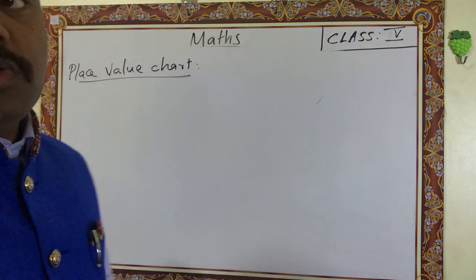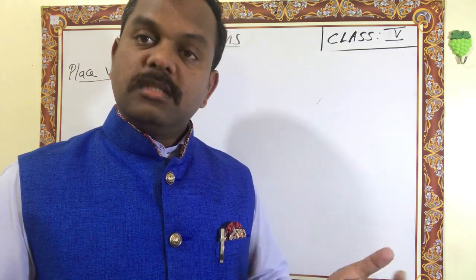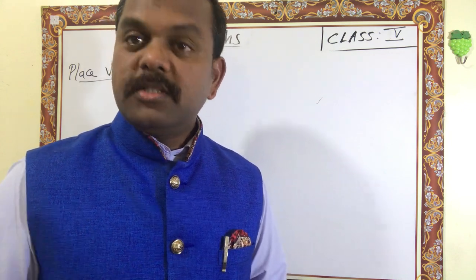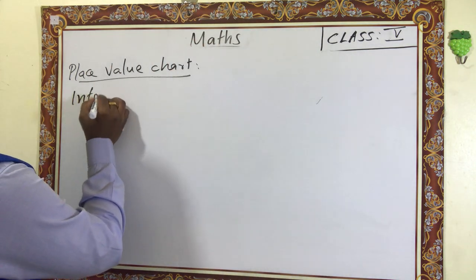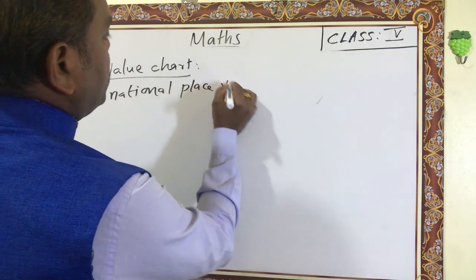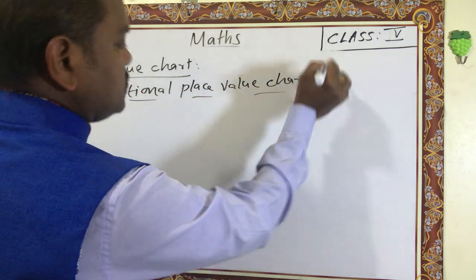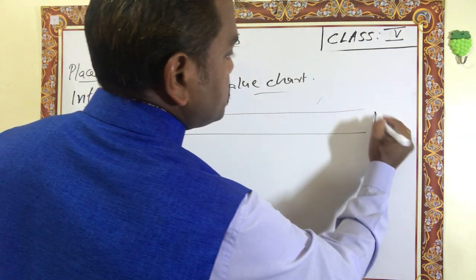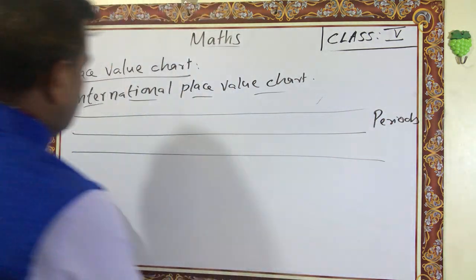In the Indian place value chart you know the order: ones, tens, hundreds, thousands, ten thousands, lakh, ten lakh, crore, ten crore, and so on. The international place value chart is a little bit different and more difficult. In the international place value chart, this line is for writing periods and this is for writing places, and here we can write the numbers.